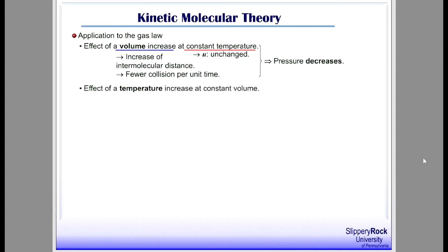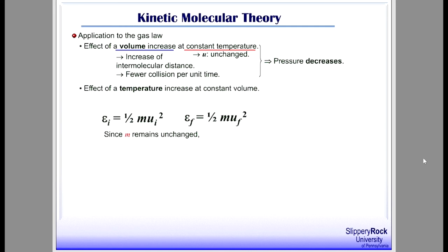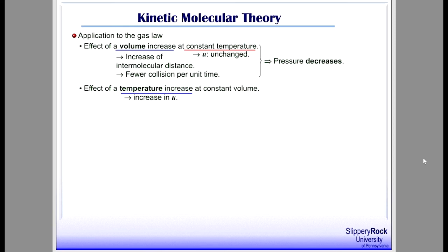How can we rationalize the increase of pressure caused by an increase of temperature at constant volume? The mass of individual gas molecules remains the same. The Kinetic Molecular Theory shows that average kinetic energy increases proportionally as temperature increases. If final temperature is greater than initial temperature, then final kinetic energy is greater than initial kinetic energy, implying final RMS speed is greater than initial RMS speed. Increase of temperature causes increase of molecular speed, which leads to more collisions per unit time, and as a result, increases the pressure of gas.